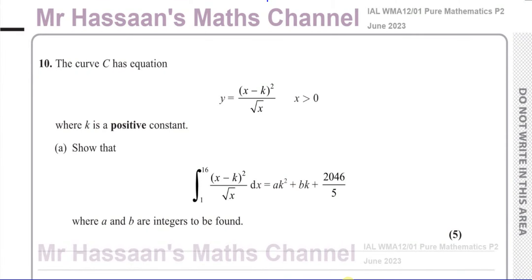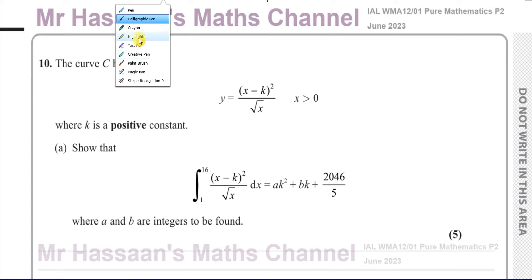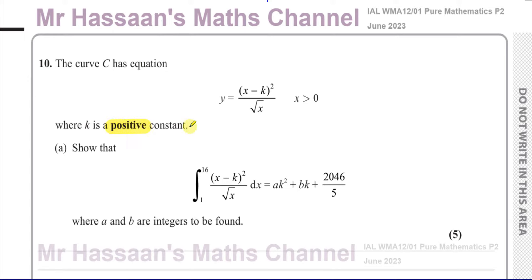Welcome back, this is Mr. Hassan's Math Channel and I'm now answering question number 10 from the June 2023 Pure Mathematics P2 exam from Edexcel. This is the International A-Level paper and the question is about a curve with equation y equals x minus k squared over root x, where x is greater than 0. They have bold typed 'positive' for k, so it's something important to keep in mind from the beginning.